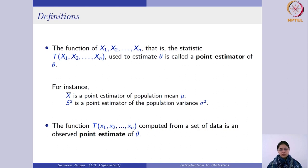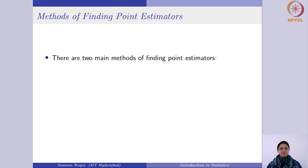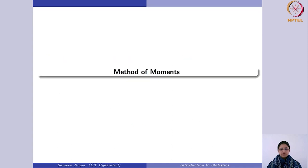Now that we know what a point estimator, parameter space, and population parameter are — and that our interest is to estimate the population parameter with a single value — we need to learn different methods for finding point estimators. For this purpose, we have two main methods: the first and oldest is the method of moments, and the second is the method of maximum likelihood. We will begin with the method of moments.